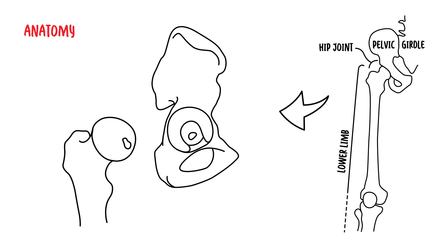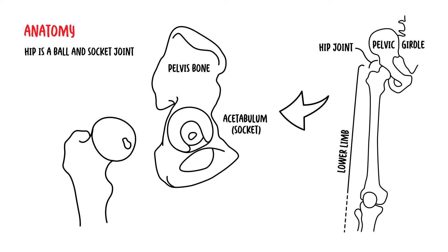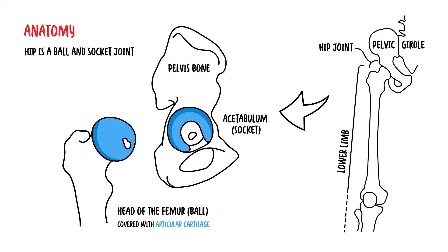The anatomy of the hip: the hip is a ball and socket joint. The socket is formed by the acetabulum, which is part of the large pelvis bone. The ball is the femoral head, which is the upper end of the femur. The surface of the ball and socket is covered with articular cartilage, a smooth, slippery substance that protects the bone and enables them to glide easily across each other.